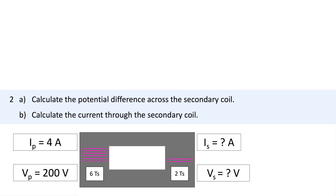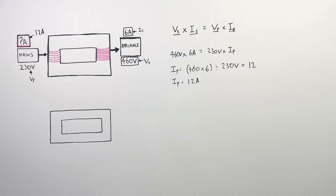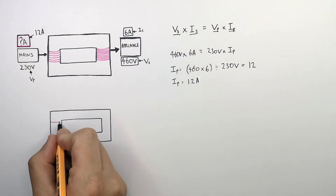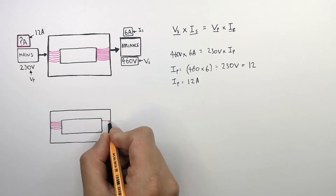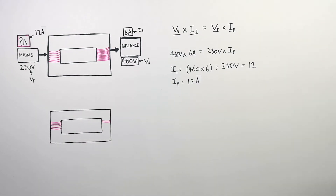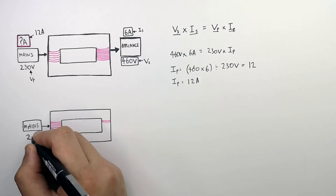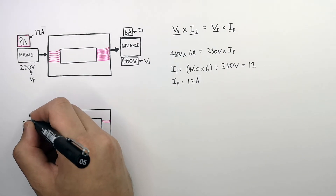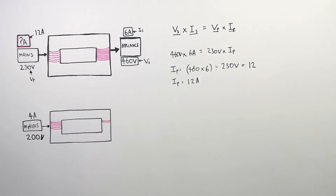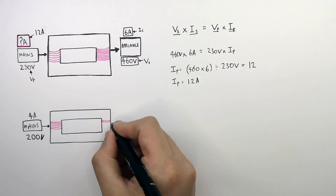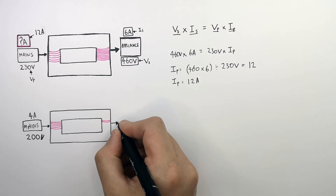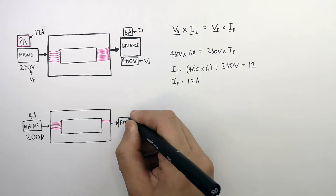This is the problem you will learn how to solve. Press pause to attempt it. The method and the answer will follow. We have a step-down transformer with more turns in the primary coil than in the secondary coil. The potential difference across the primary coil is 200 volts, the current in the primary coil is 4 amps, and the transformer steps down the potential difference to a lower voltage to supply an appliance.